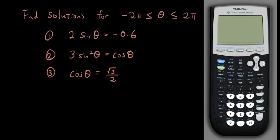Hey guys, it's Eddie the Magic Monk here. In this lesson we're going to show you a way to solve any trigonometric equation using the graphics calculator. So let's have a look at this first equation. I have 2sinθ equals negative 0.6. What does θ equal?